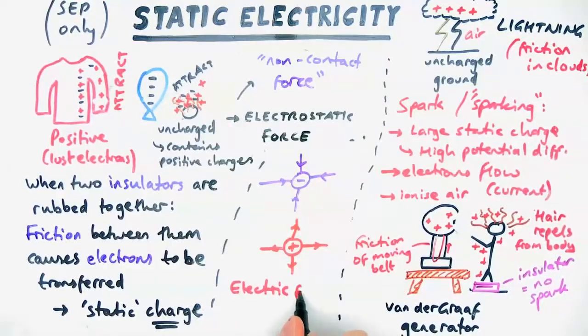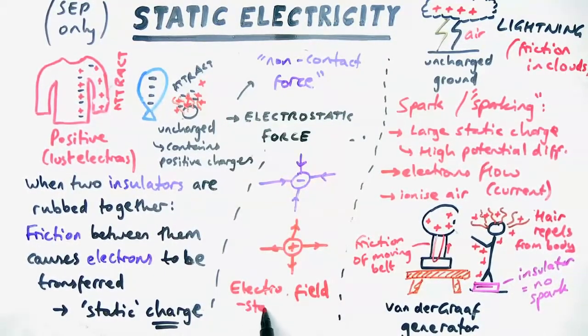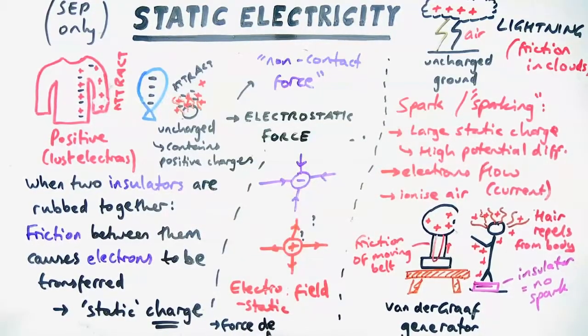Now, for positive charges, we draw the arrows going away from them to show the electrostatic field. Negative charges, the arrows go towards them. Now, it's an example of what's called a radial field, which means that the further away, the force decreases.